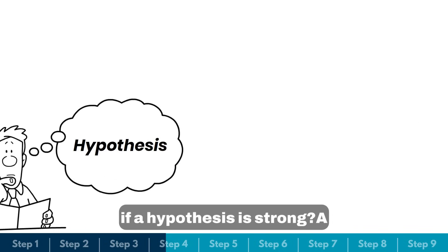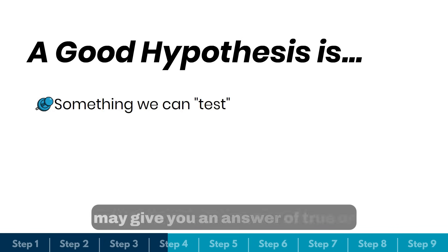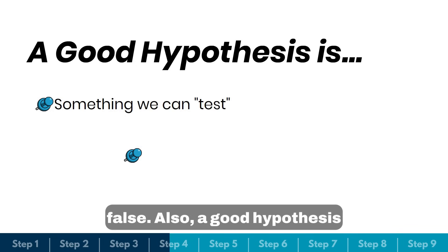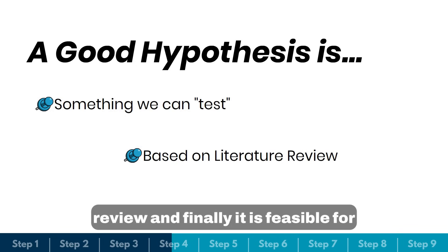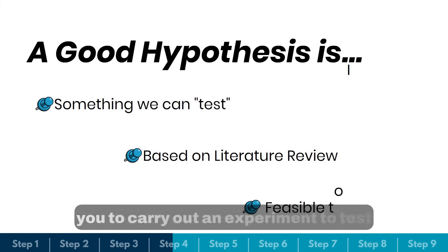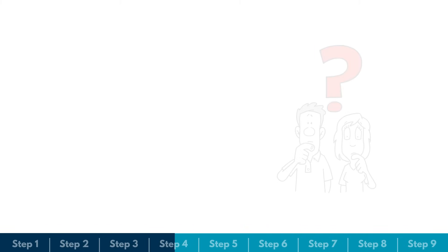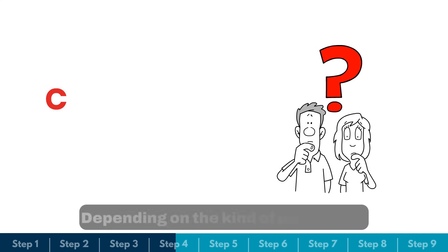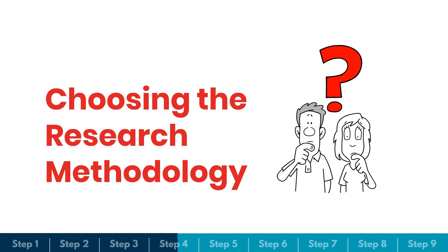So how do you determine if a hypothesis is strong? A good hypothesis is testable — it should give you an answer of true or false. It is also based on previous literature review, and finally it is feasible for you to carry out an experiment to test it.